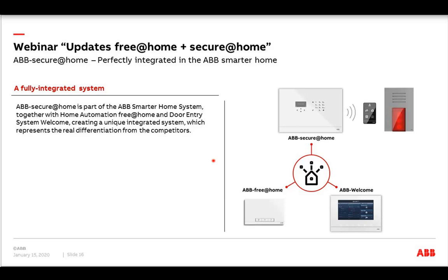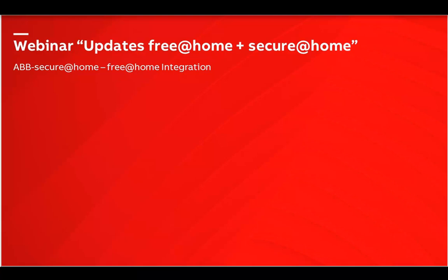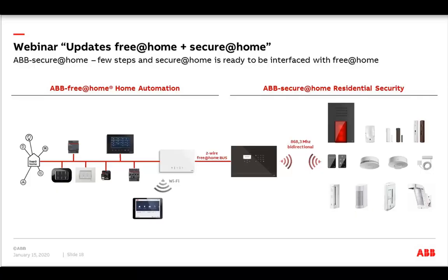All in all, we now have a fully integrated system for residential buildings: Free at Home for home automation, Busch-Jaeger/ABB Welcome for door communication, and Secure at Home for security. All three systems can work together — we can combine them, create actions, and so on. We have a complete solution for villas, houses, and all residential projects. Now let's go into the integration details.